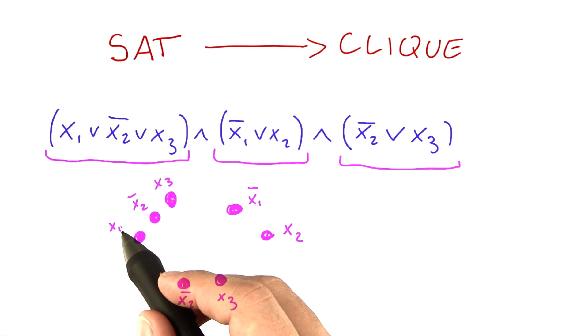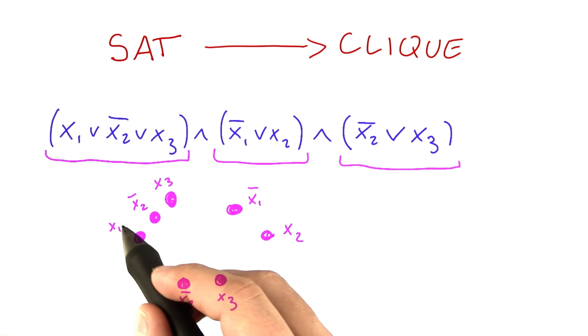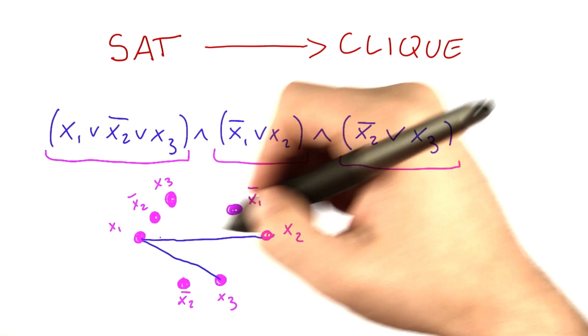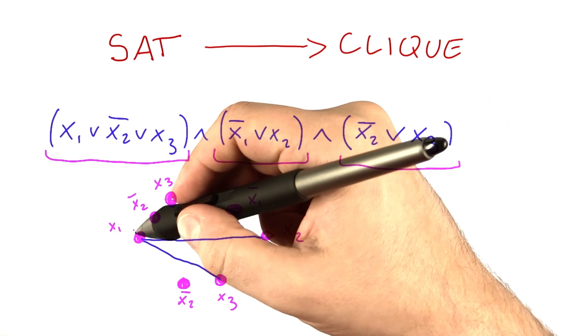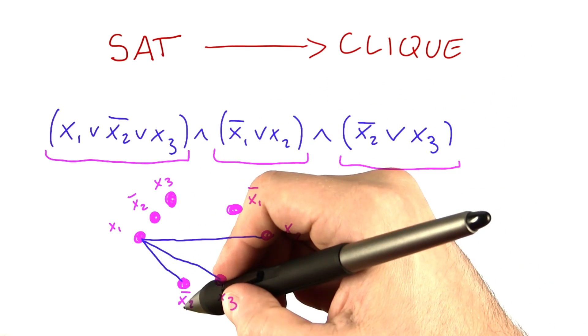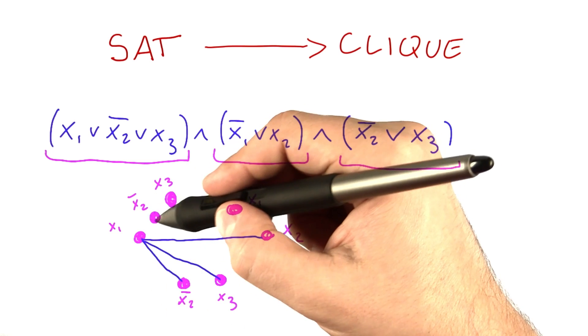With one exception, we're not going to draw an edge if we have the same variable, but one is the untouched variable and the other one has a not. So x1 and x2, we're going to draw an edge. x1 and x3, we're going to do an edge. And x1 and not x2 also, but we're not going to do an edge here. And it works similarly for this one here.